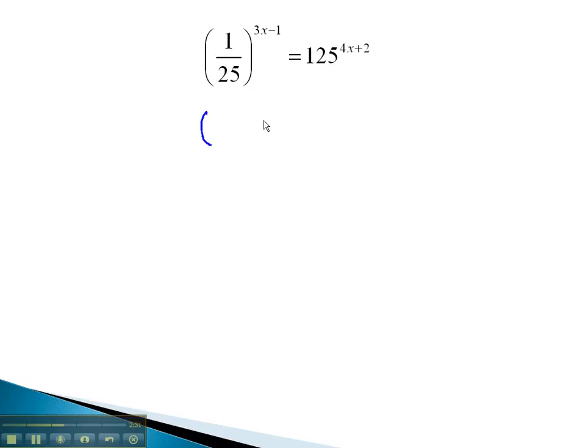The 1 over 25 can be written with a base of 5. 5 squared is 25, and the fraction is created if the exponent is negative. We will write this as 5 to the negative 2.